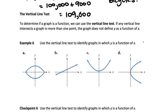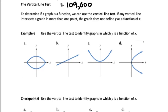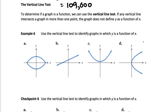The last thing we're going to talk about in this video is the vertical line test. We look at vertical lines across the graph, and if any vertical line intersects the graph in more than one point, the graph is not a function. We think about: if I were to draw a vertical line, is it going to cross the graph in more than one place at any point?